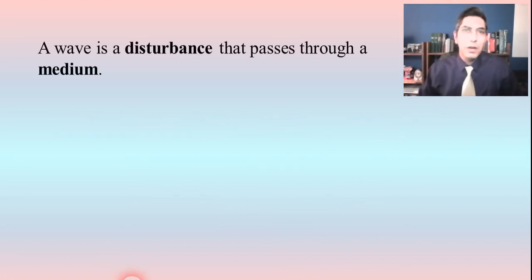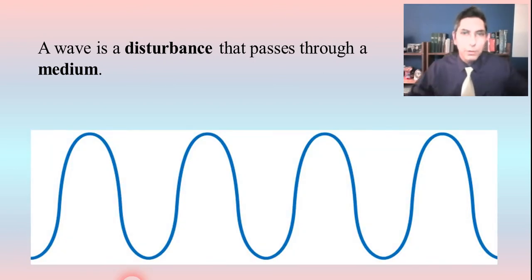Now when we talk about a wave, a wave is basically a disturbance that passes through a medium. So when we think about a wave, it might look something like this. And if you've ever seen a wave, it may go through a medium such as water. That might be the medium that we're talking about. A wave on the ocean that goes through water, of course.